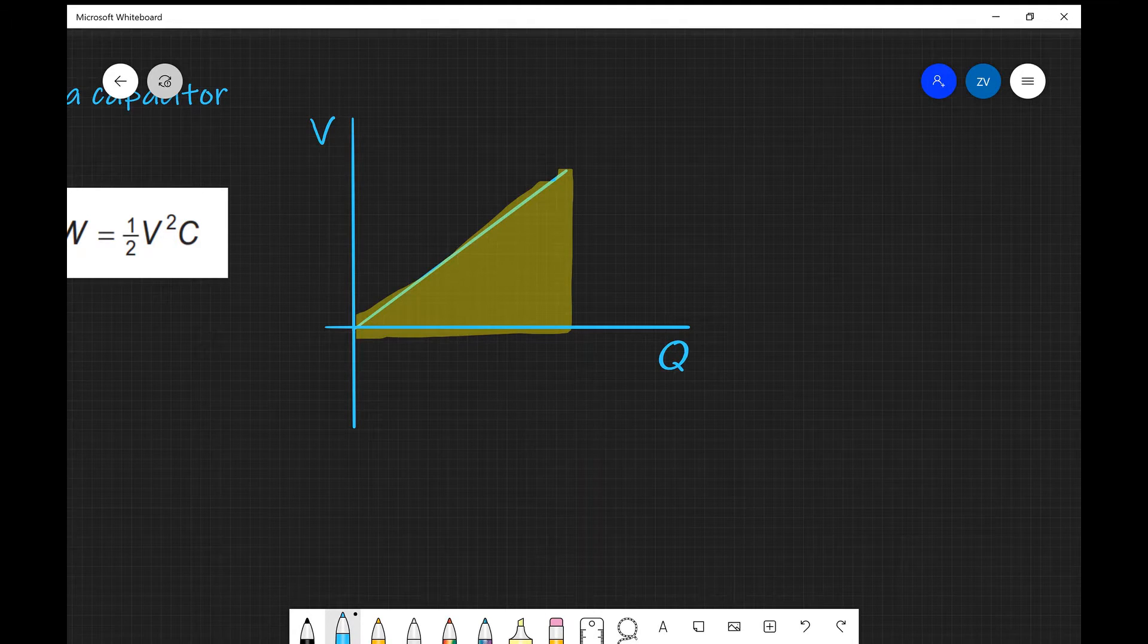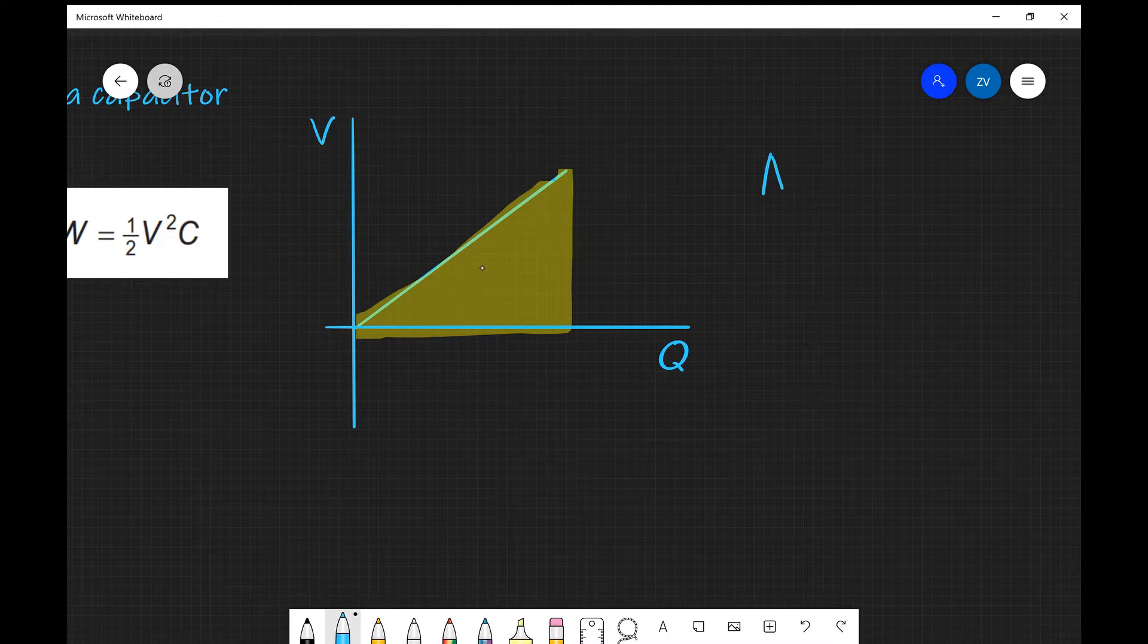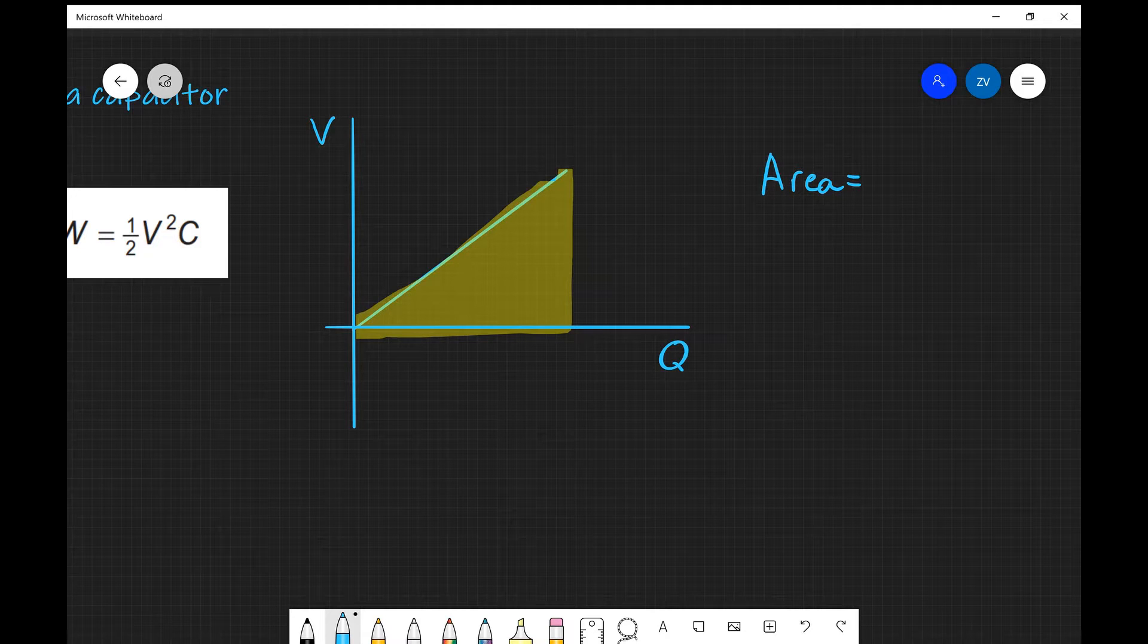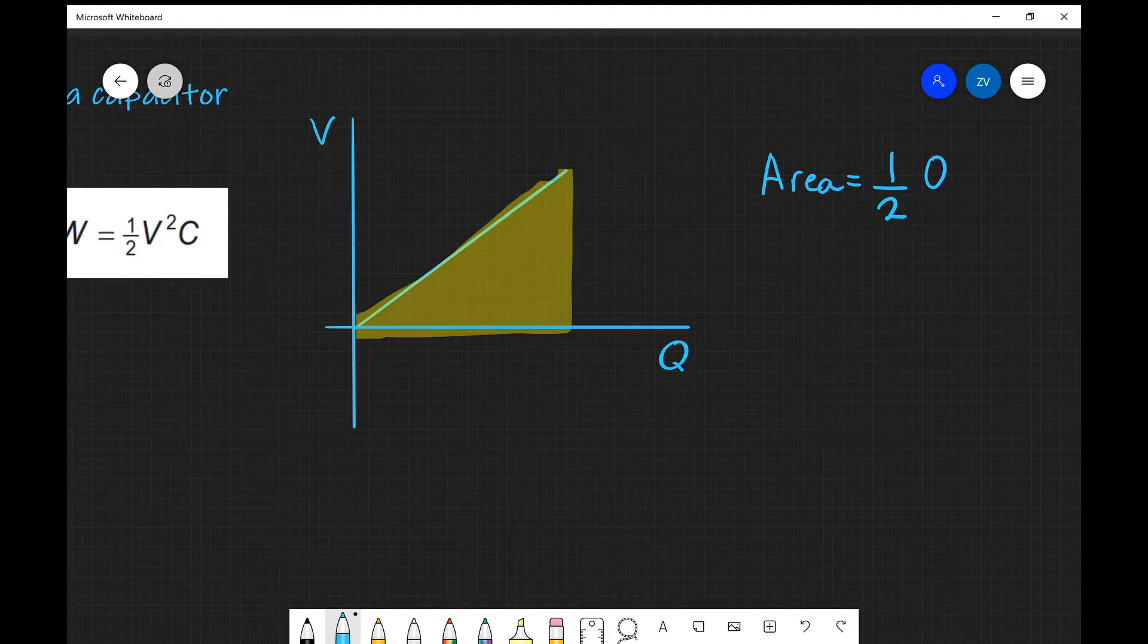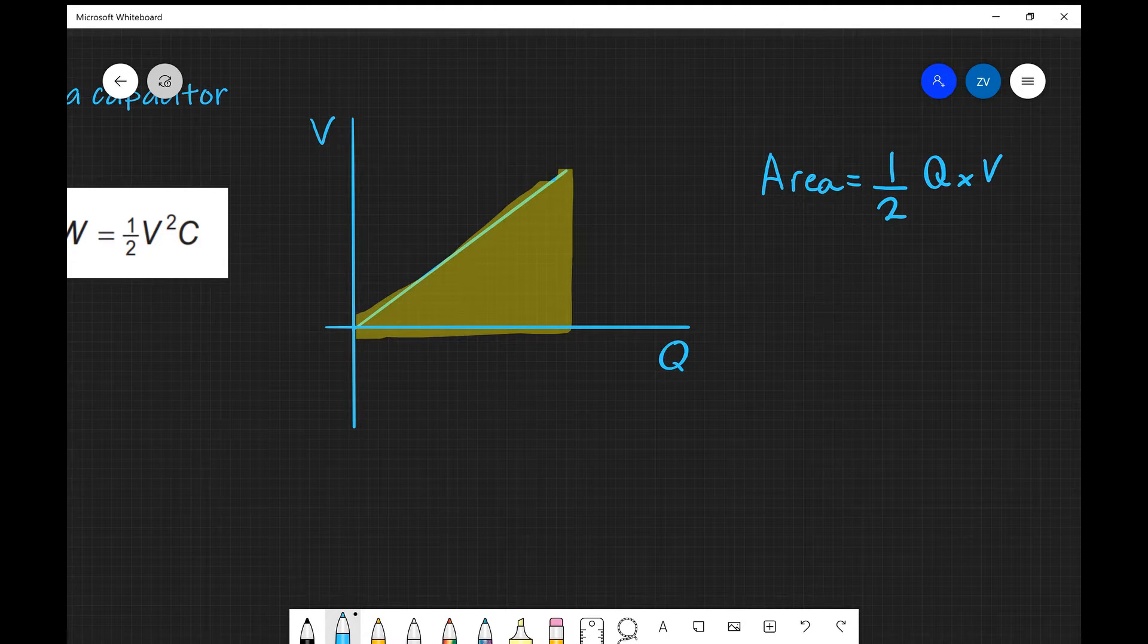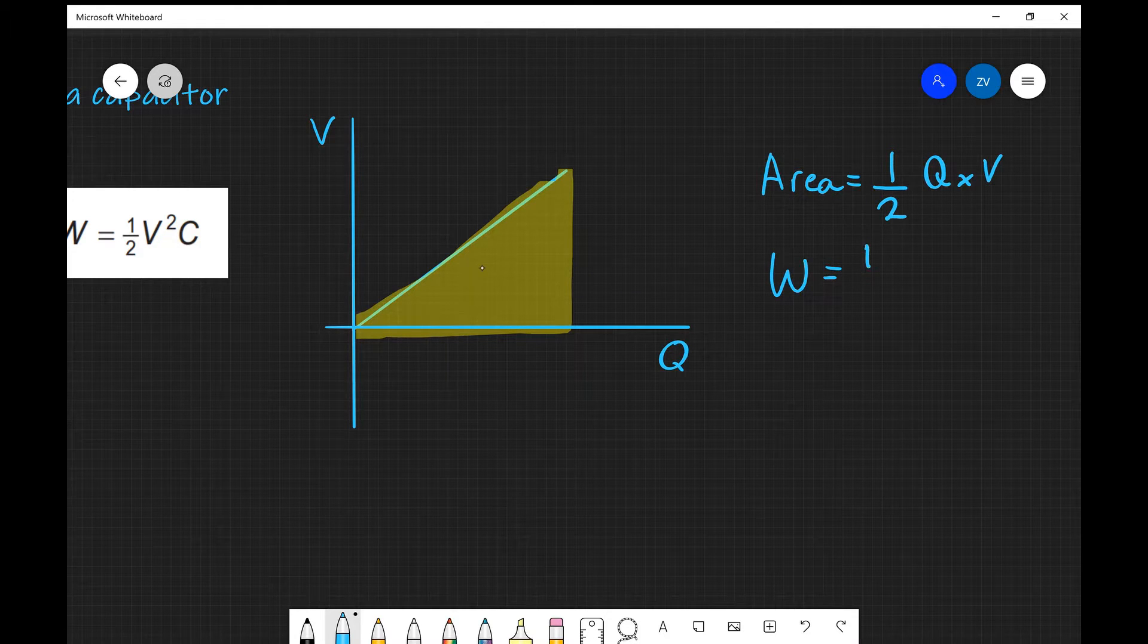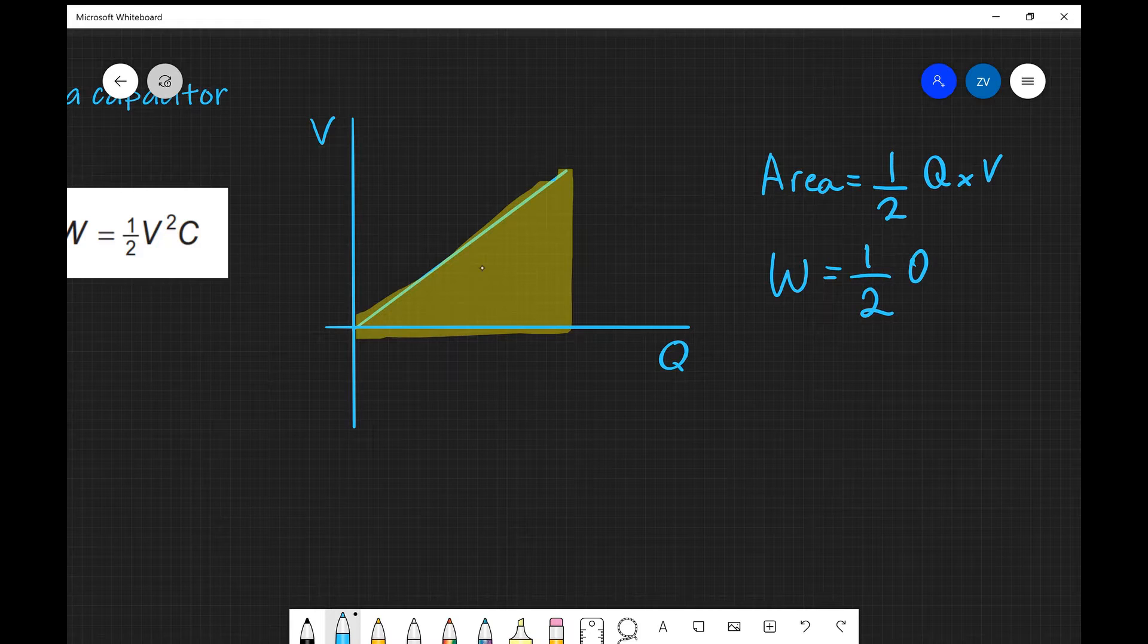Now the area is going to be given by half the base multiplied by the height, so the area will be equal to half the base, half times Q multiplied by V. In this case, the product of charge multiplied by energy per charge actually gives us energy, so the area underneath a V against Q graph will actually give us the energy stored within the capacitor. So W is going to equal half Q times V.